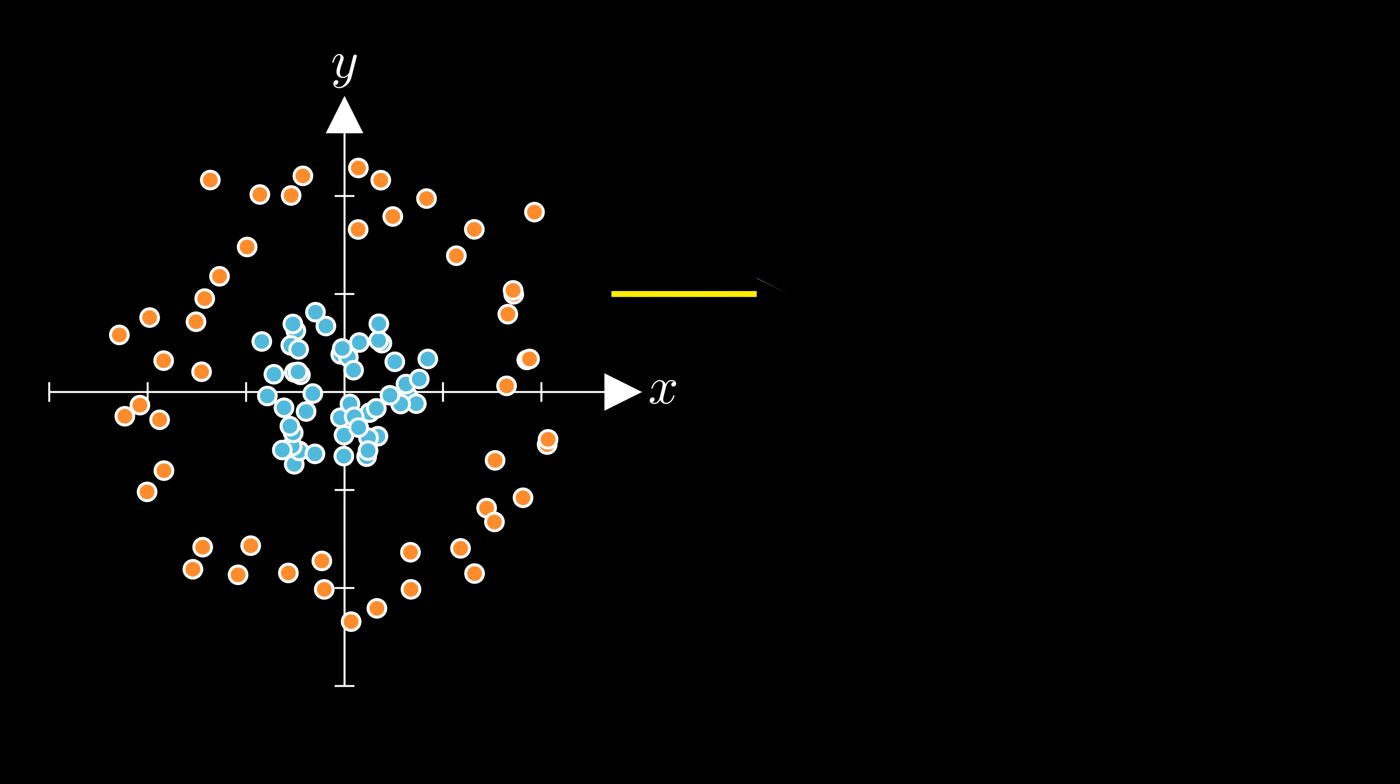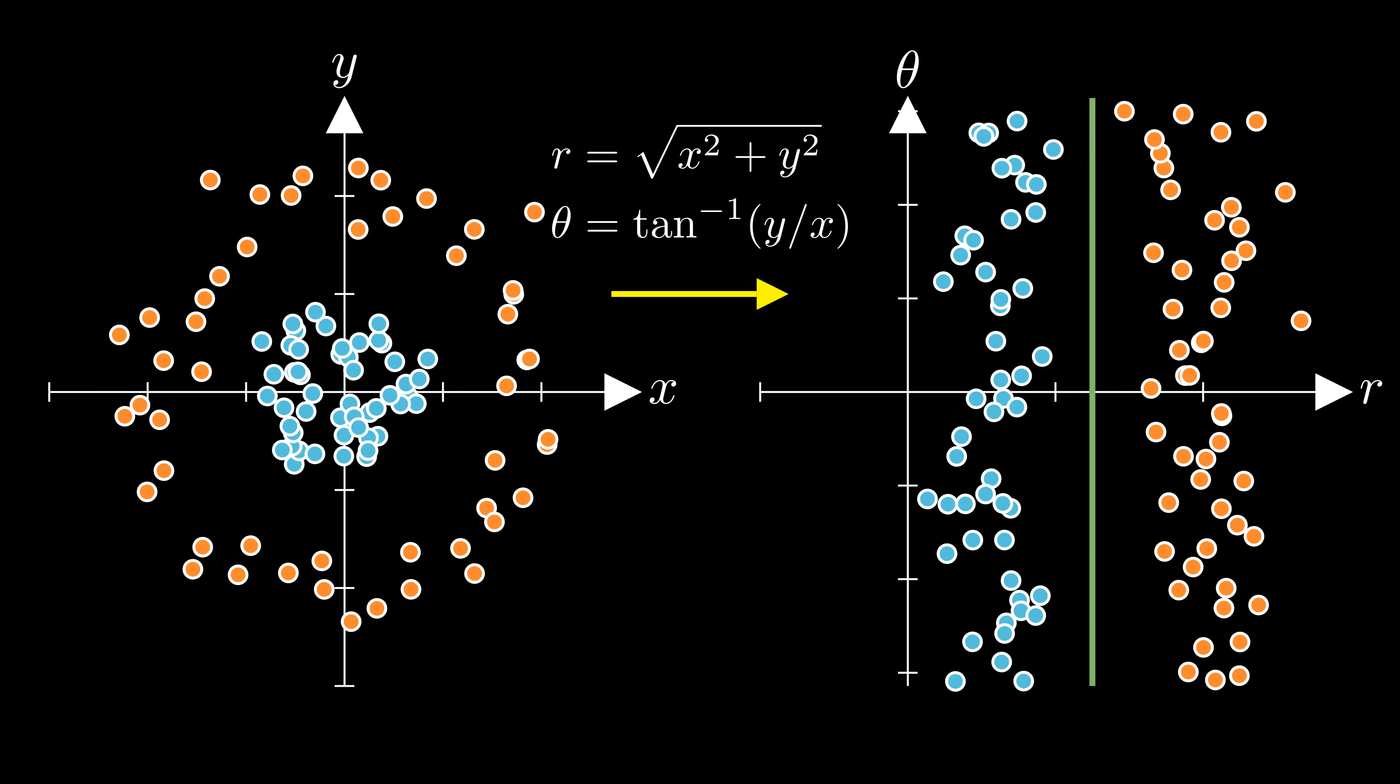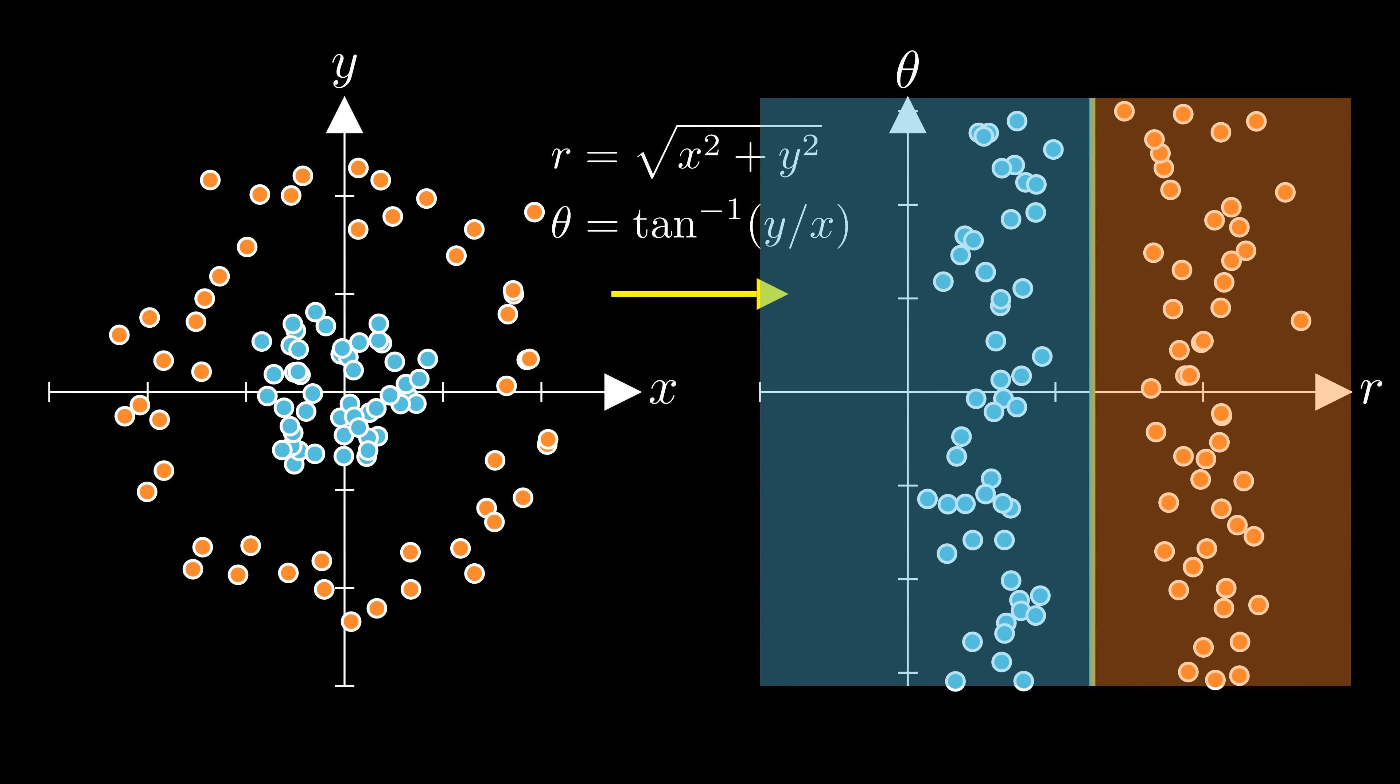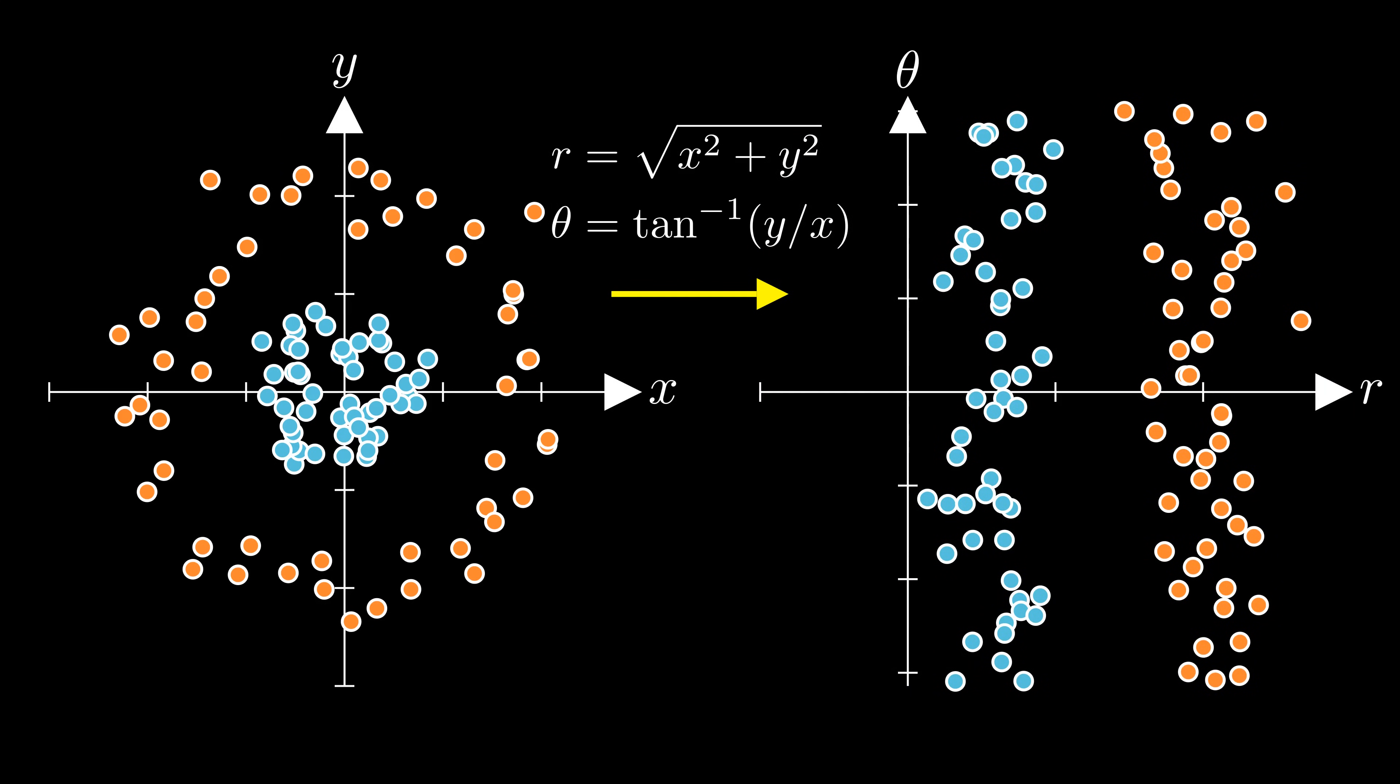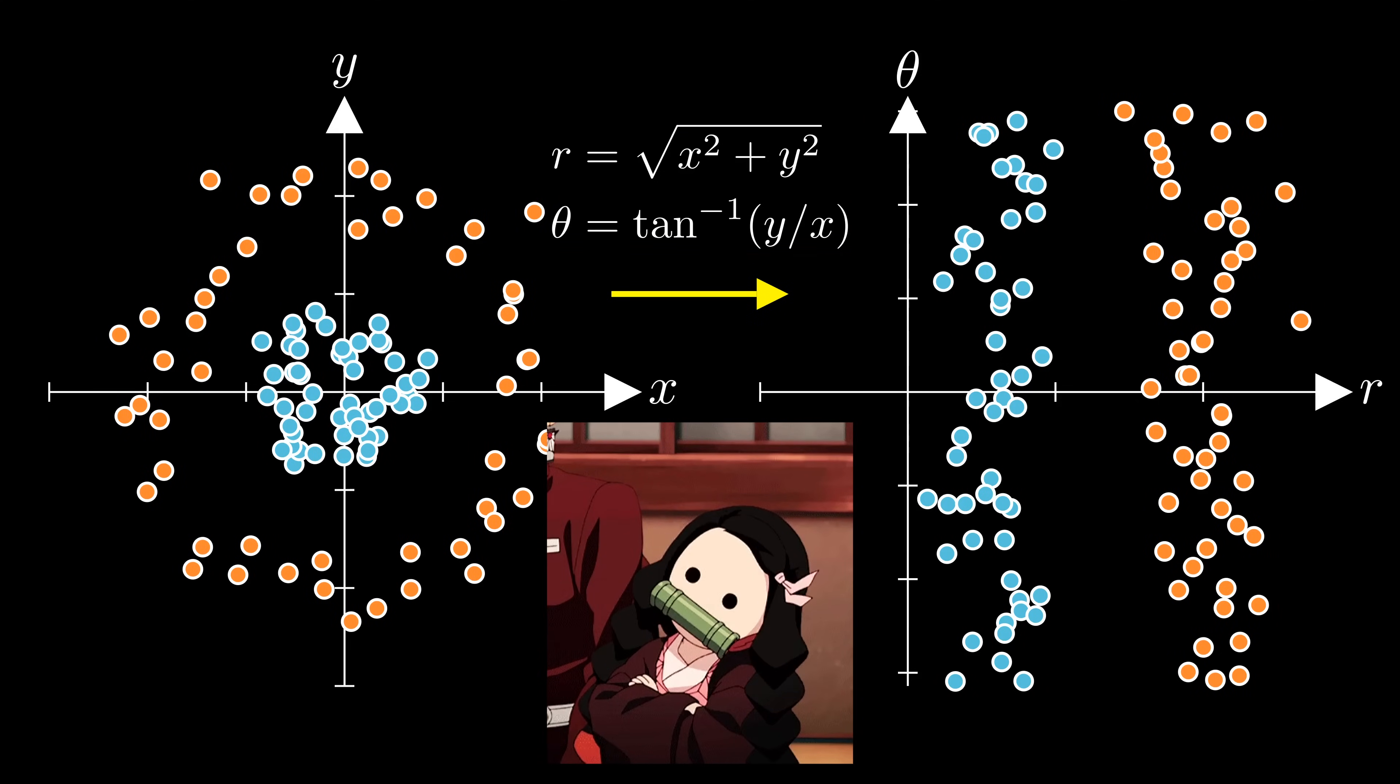Now let's transform the data into radial coordinates. By changing our perspective on the data, separating the two groups with a straight line becomes much easier. This example highlights the importance of having good feature representations.